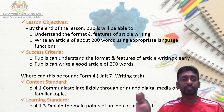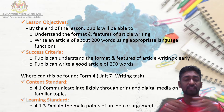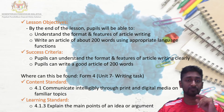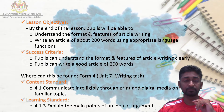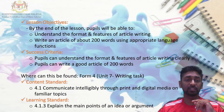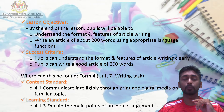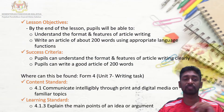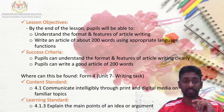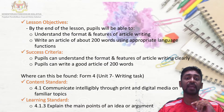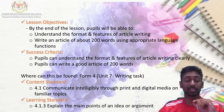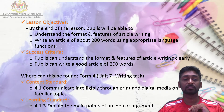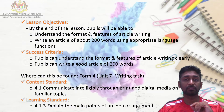The lesson objective today: by the end of the lesson, students will be able to understand the format and features of article writing, and will also write an article of about 200 words using appropriate language functions. The success criteria is that students can understand the format and features of article writing clearly and write a good article of about 200 words.